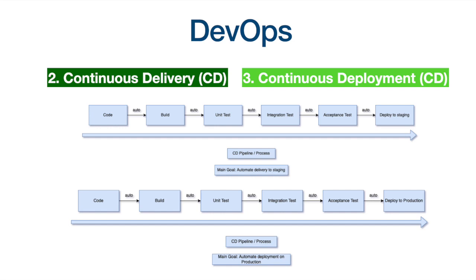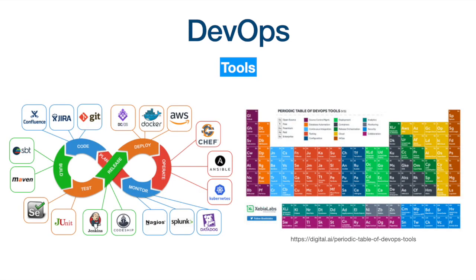There are many tools that can be used to implement different processes and pipelines in DevOps. In the diagram on the left, you can see some of the most famous tools for continuous integration, continuous delivery, and continuous deployment — one can select from a variety of tools. There is even a periodic table of DevOps tools; the link to this periodic table is included in the description.